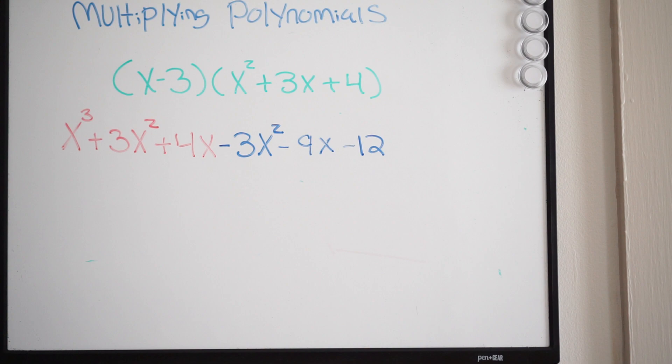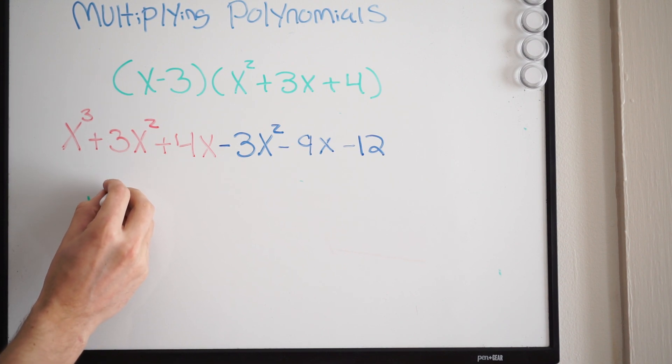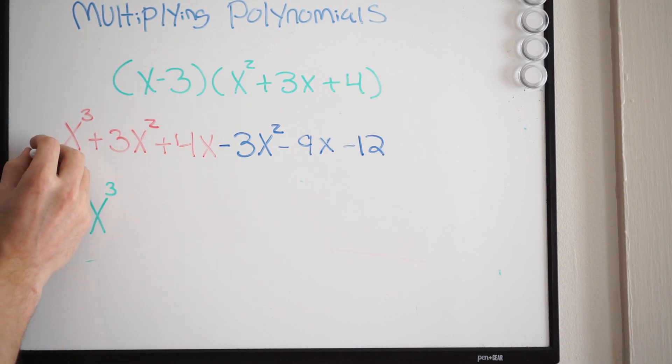Okay, so at this point you just have to combine your like terms. Notice that we have this x cubed, and that's on its own, so we can't combine that with anything. So we'll start by writing x cubed. And what I'll do is I'll cross these out, we're done with them.